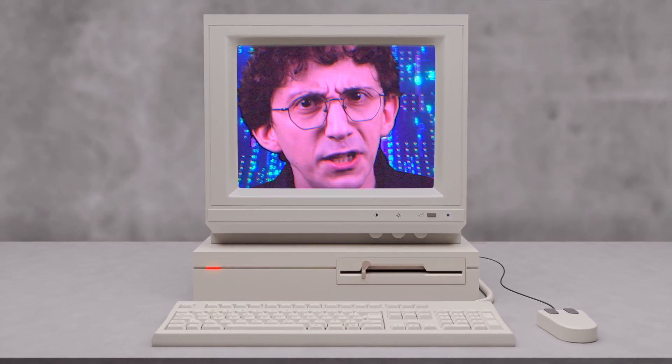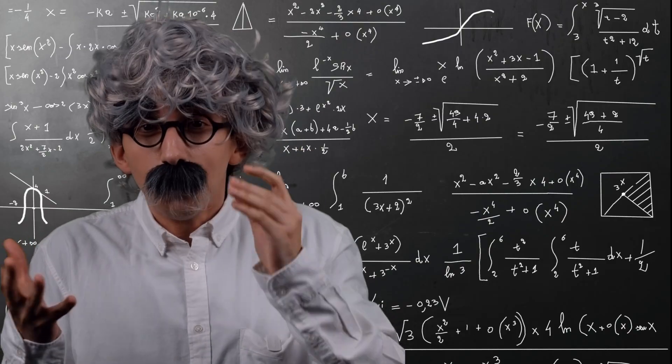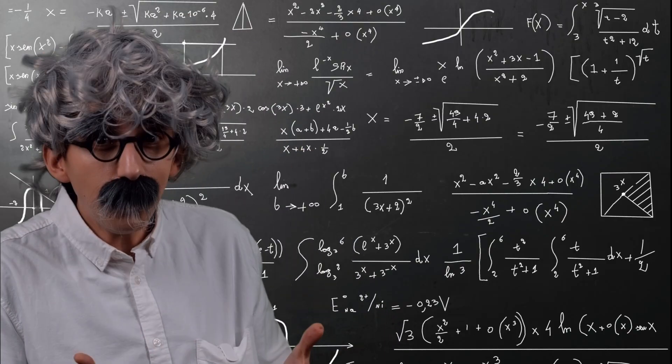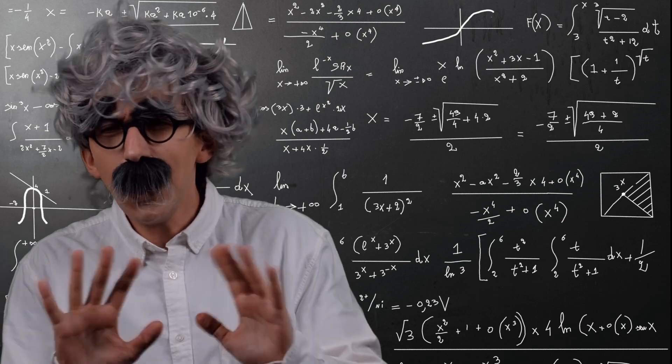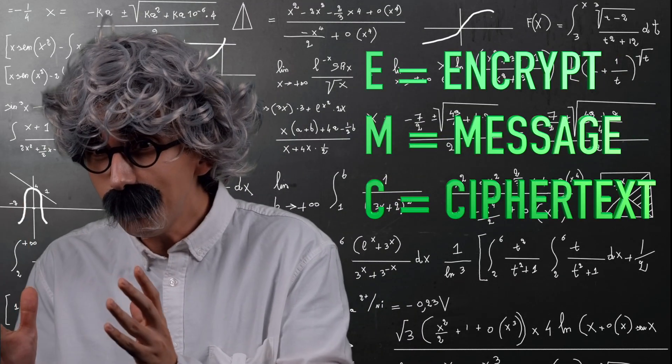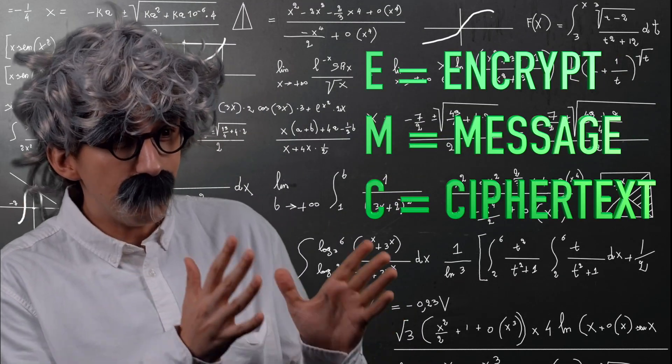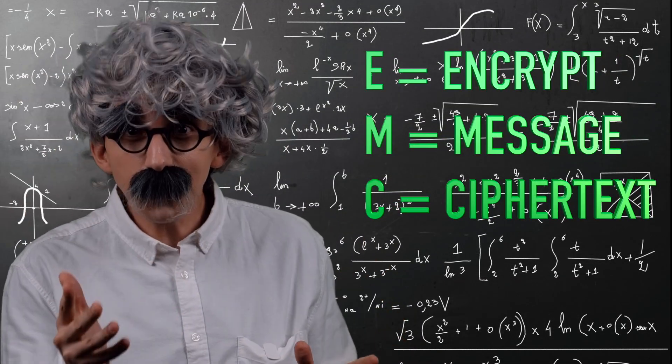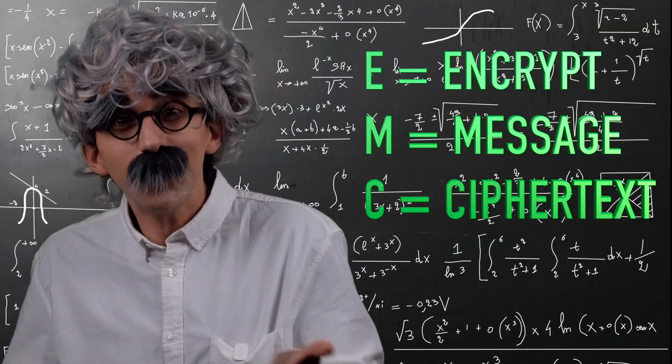Let's turn those hash functions into real symmetric ciphers! E equals MC squared? Nein, nein! E equals encrypt, M equals message, and C equals ciphertext!